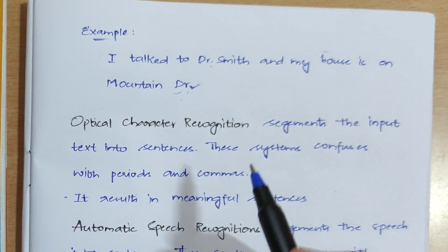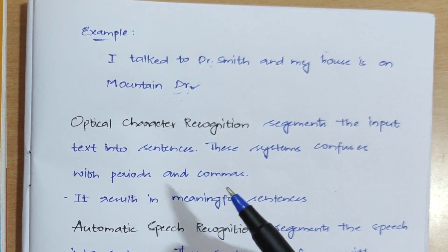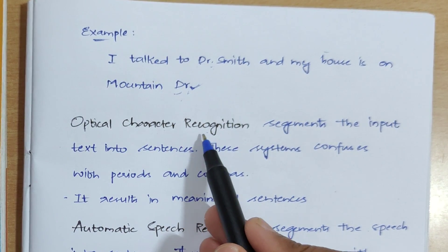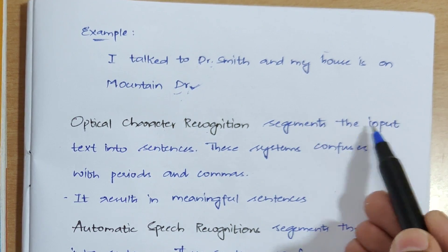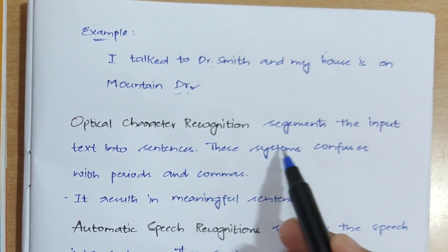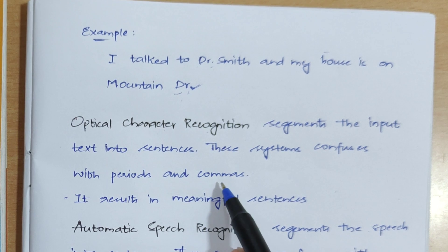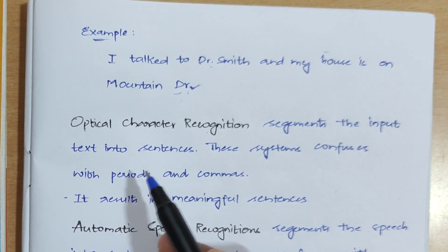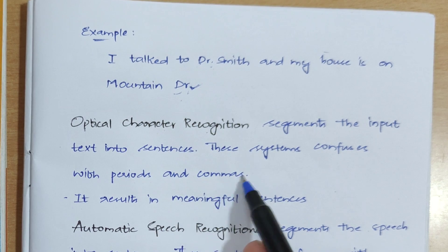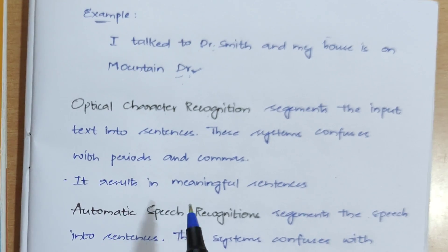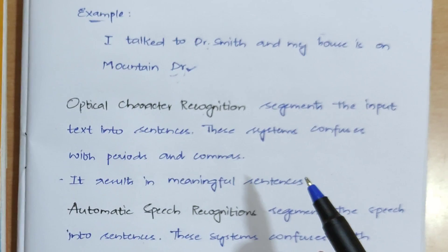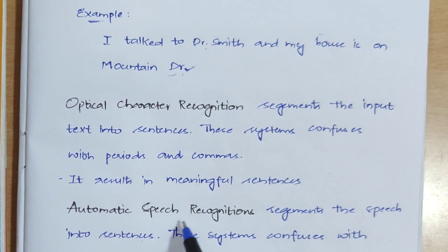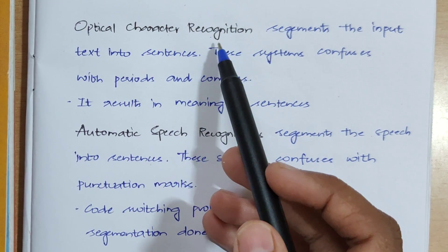There are different systems to identify sentence boundaries. The first one is Optical Character Recognition (OCR). OCR segments the input text into sentences, but it may get confused with periods and commas. Despite this confusion, whatever sentence boundary it detects results in meaningful sentences.